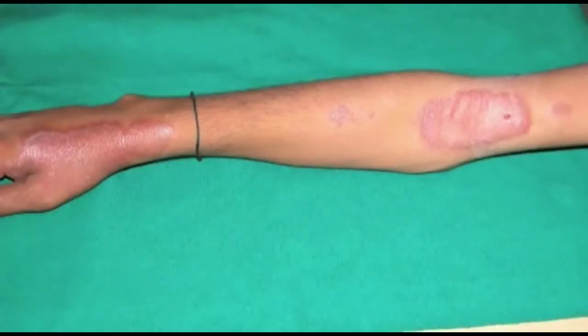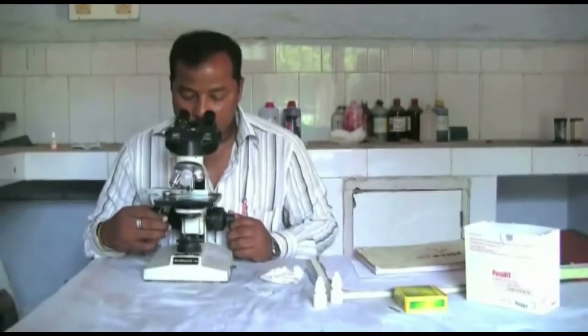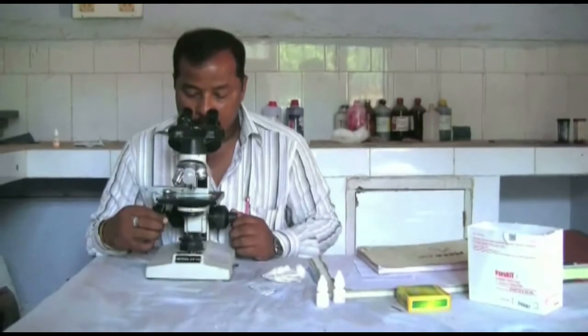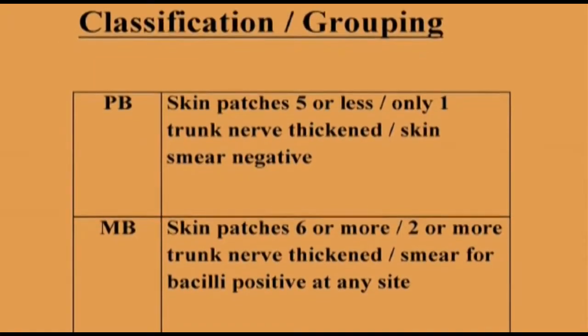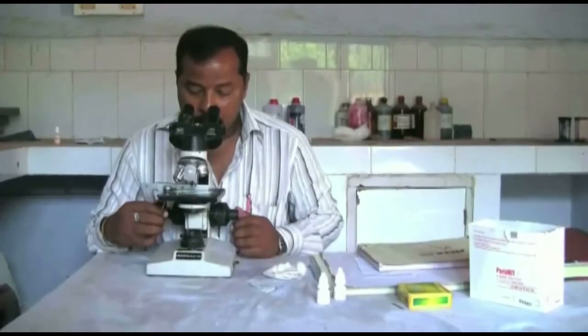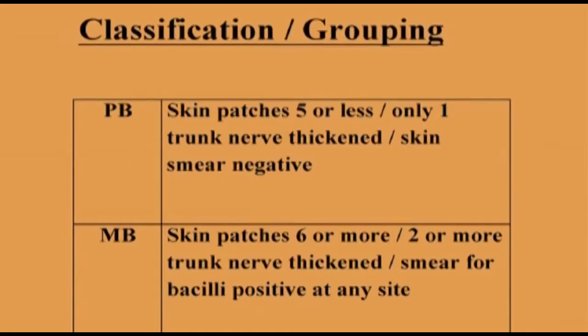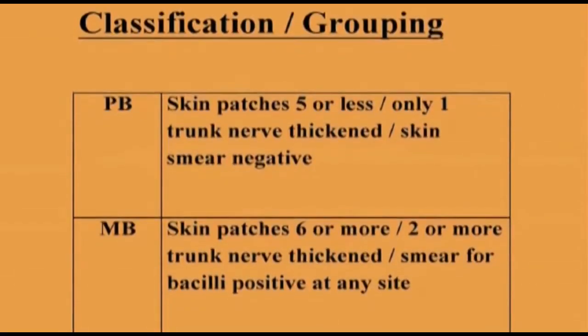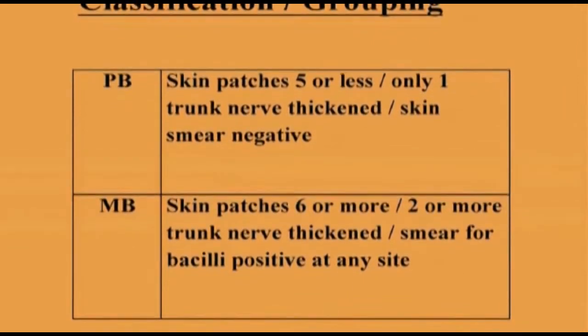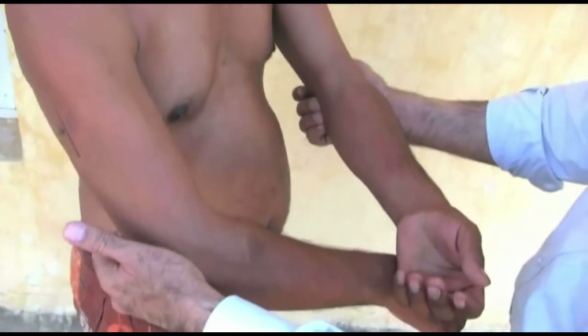Count the skin patches. If you find 5 patches or less, classify the patient as PB. If you find more than 5 patches, classify the patient as MB. If the diagnosis was difficult to make, a skin smear may have been made in the laboratory. If the skin smear is negative and the patient has 5 patches or less, classify as PB. If the skin smear is positive, classify the patient as MB, whatever the number of skin patches. If one trunk nerve is thickened with definite loss of sensation in its area, classify the patient as PB. If more than one trunk nerve is thickened, classify the patient as MB.